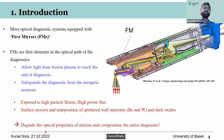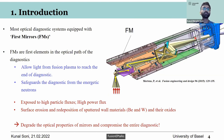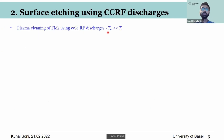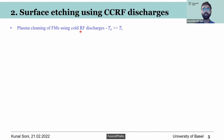When that deposition happens, it degrades the optical properties of the first mirrors. If the optical properties are lowered, the quality of the signal and data received at the end of the diagnostic will be significantly compromised. So it is important to keep these mirrors clean and maintain their optical properties high. The way we do this is by cleaning the mirror surfaces using cold radiofrequency discharges — one of the approaches being implemented in ITER.